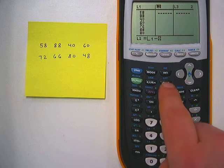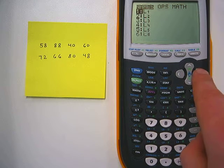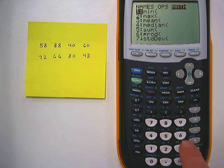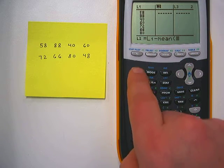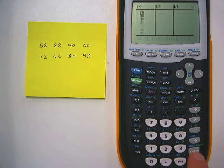Now we need the mean of list 1. So we're going to hit 2nd and the stat button, above it says list. We're going to hit the right arrow twice to get to the math. Then you notice the third option is mean. We're going to select that and we want the mean of list 1. So we hit 2nd 1 again.